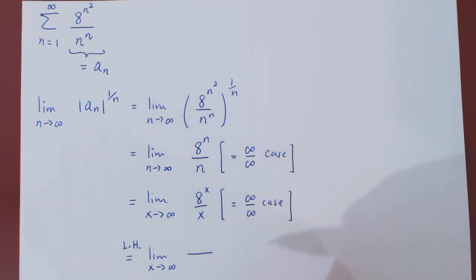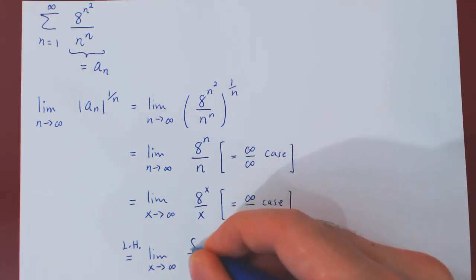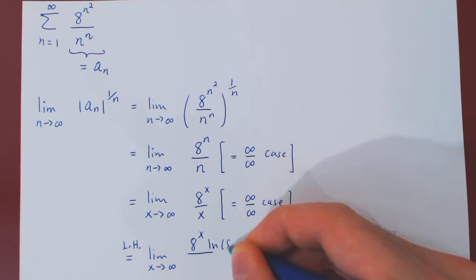So, the derivative of 8 to the x, 8 to the x being an exponential function, gives us 8 to the x ln of 8, all over the derivative of x, which is simply 1.